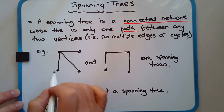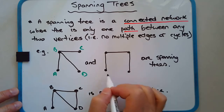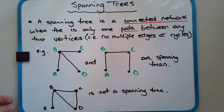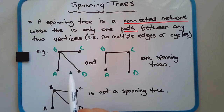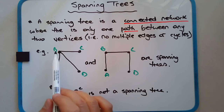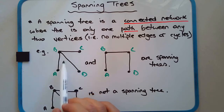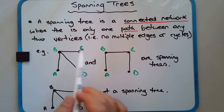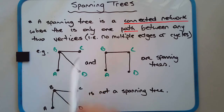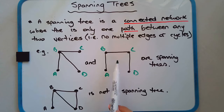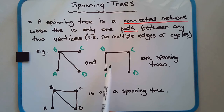So, examples of spanning trees. If we had four vertices — A, B, C, D — pick any two vertices and there's only one way to get from one to another. To go from A to D, the path is A, B, D. To go from A to C, it can only be A, B, C. Notice that between the two diagrams, the edges are placed differently, but it's still a tree. So there are multiple spanning trees possible given any network.